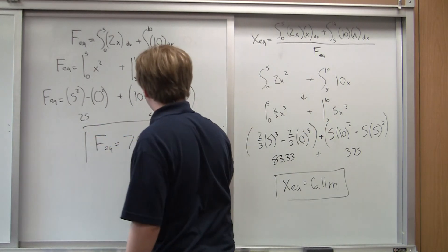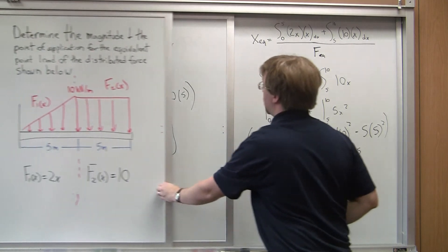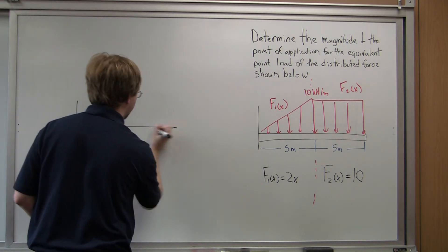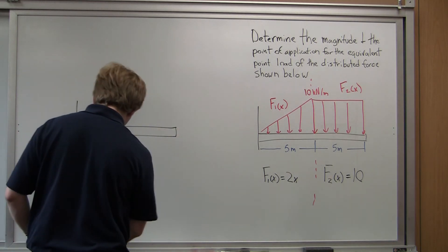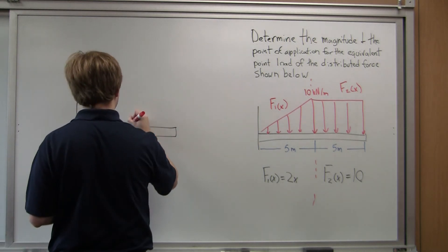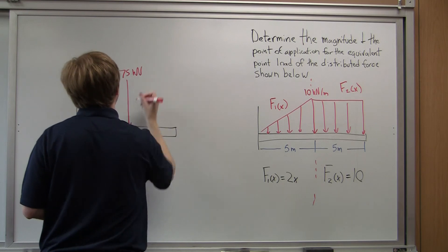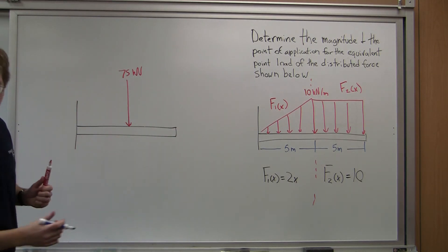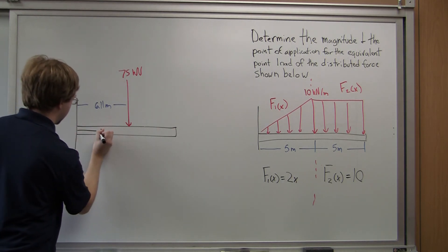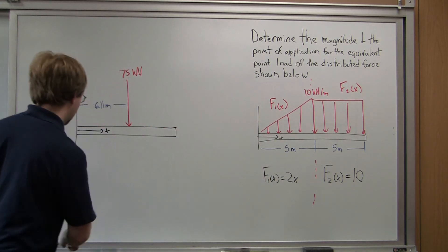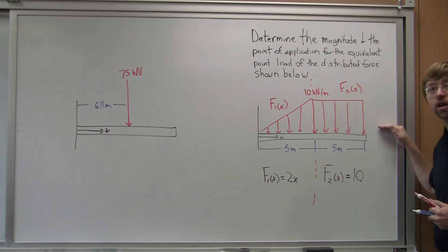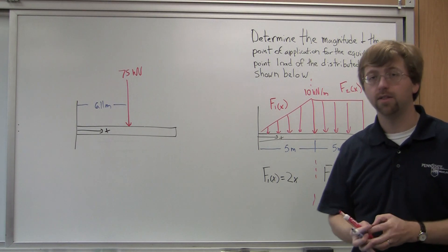I've got x_eq and F_eq. Going back to my original diagram: drawing a replica of my original beam, it's ten meters long. F_eq was seventy-five kilonewtons, and the location of this force is six point one one meters out in the x direction. This one force is statically equivalent to our original distributed load shown over here. With this, we've got our solution. Thank you for watching, and I hope to see you again.